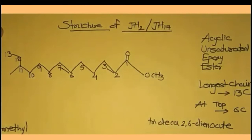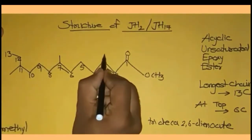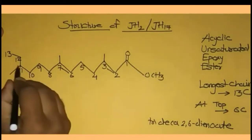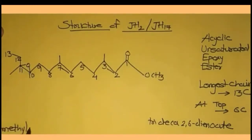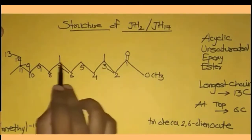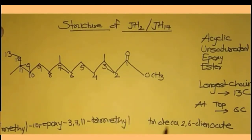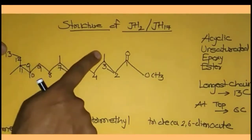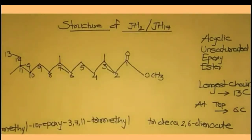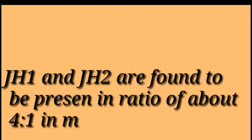On the 3rd, 7th, and 11th positions there are three methyl groups, so we write 3,7,11-trimethyl trideca-2,6-diene-oate. The total carbon count is 17: 13 in the main chain plus 14, 15, 16, and 17 from the methyl groups. Overall 17 carbon atoms — hence JH17. JH1 and JH2 are present in the ratio of about 4 to 1 in male silkworm moth.